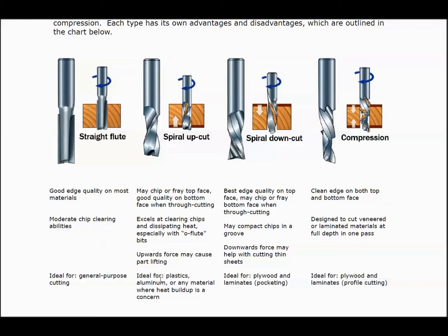The up spiral's upward force may cause lifting, but it works really well for plastics and aluminum where heat buildup is a concern. The spiral down cut is a great bit as well; however, the downward force could compact chips down into the groove, so you wouldn't want to use it for drilling. The compression bit has both an up spiral and a down spiral built into its geometry, which keeps the thin veneers on the edge of plywood from ripping apart. It holds the sawdust into the kerf, and you won't expose your vacuum as quickly.